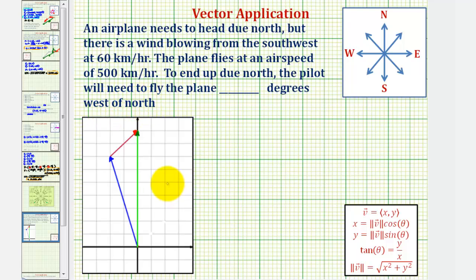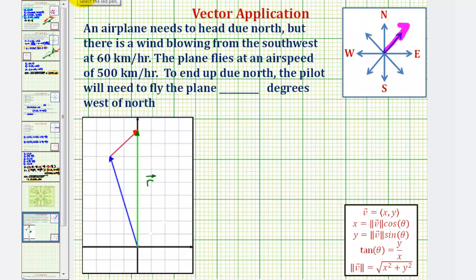We'll solve this problem using vectors. The first thing to recognize is that the plane wants to fly due north, and therefore the plane wants to take the path of this green vector here, so we'll call this the resultant vector. Because there's a wind blowing out of the southwest — blowing in the direction of northeast — we can model the wind using this red vector here, so we'll call this vector w.